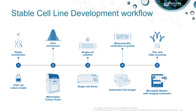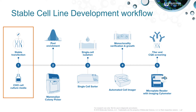The process of cell line development begins with the introduction of foreign DNA, traditionally your recombinant protein of interest, into a host cell, a process known as transfection. Upon transfection, cells begin expressing protein for a period of time before completely halting production. However, a small subpopulation maintains their ability to express recombinant protein for long periods of time due to integration of the foreign DNA into their genome. They are referred to as stably transfected cells and are selected to move forward into the next step of the process.